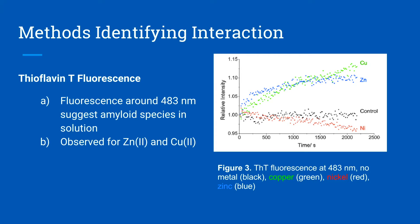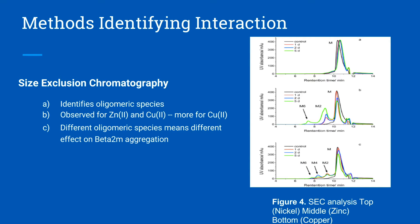The first method used is called bioflavent defluorescence, where around 483 nanometers one can find the amyloid species. These species occurred for the copper and zinc complexes, while nickel showed no complex formation, as shown in figure 3. The second method used is size exclusion chromatography, where oligomeric species were found for each of the complexes. Only the zinc and copper complexes formed these oligomeric species, as shown in figure 4 on the second and third graphs.